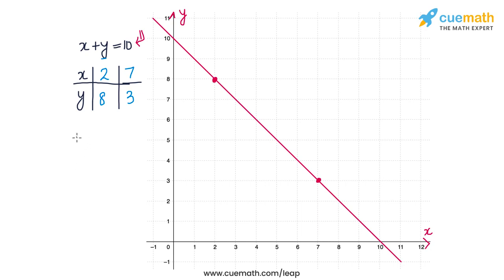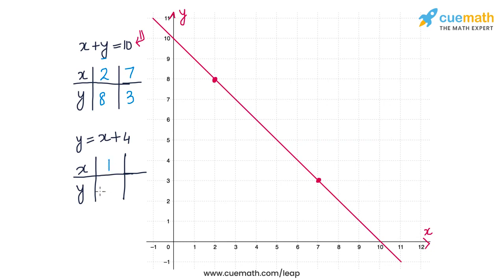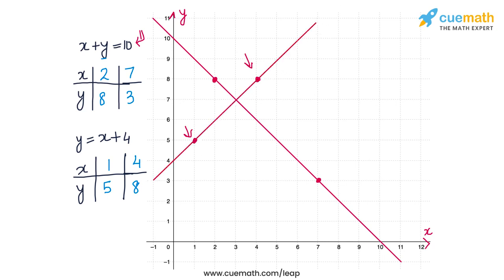The second equation was y equal to x plus 4. To plot this, let's find two solutions. If x equals 1, then y equals 5, and if x equals 4, then y equals 8. So two solutions are (1,5) and (4,8). Plotting these points and drawing the line through them gives us the solution line for the second equation y equal to x plus 4.